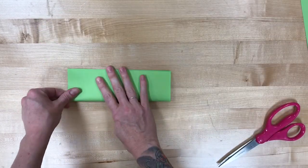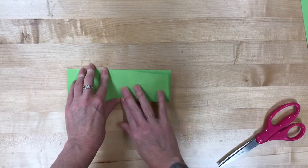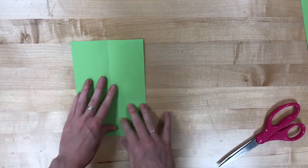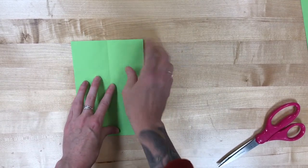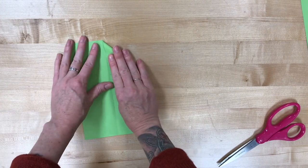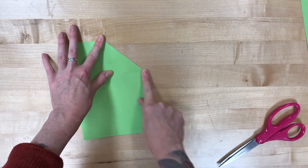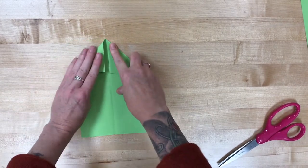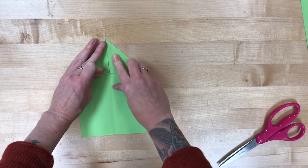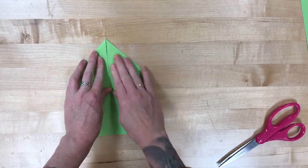We're going to fold in half the long way, make a nice sharp crease on there, open it back up. Take the top right corner and we're going to bring it to that center line. We're going to do the same thing to the top left corner, bring it to that center line, nice sharp crease.